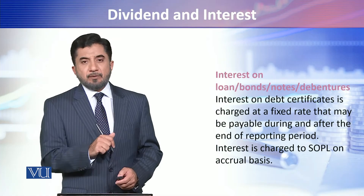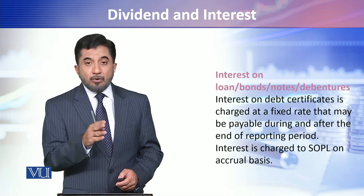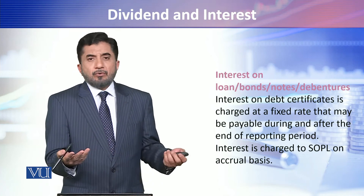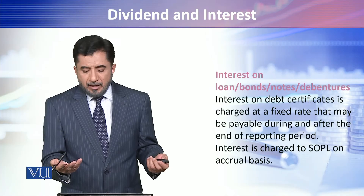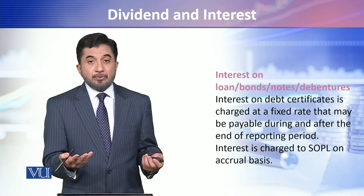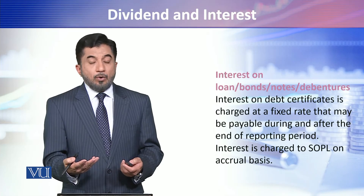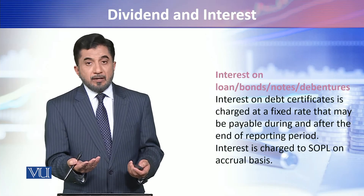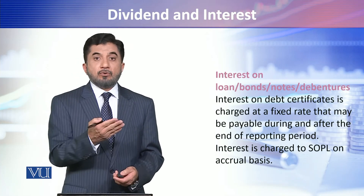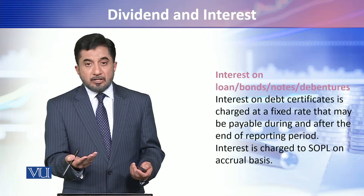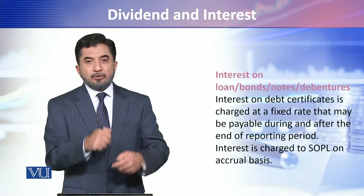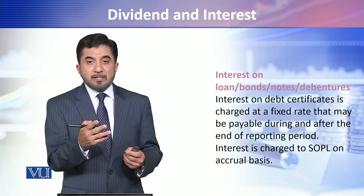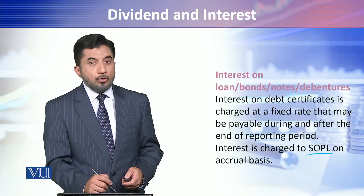अब बात आती है interest की, जो borrowings पे pay करना होता है — loan, bonds, notes, debenture — کچھ بھी borrowings हैं जिन पे interest pay करना है। इसको accrual basis पे expense out करना होता है — यह business का expense है। इसको expense में debit करते हैं, उसके against interest payable create करते हैं, फिर bank के ज़रिए payment करते हैं। Bank balance reduce होता है और interest expense statement of profit and loss में close हो जाता है।